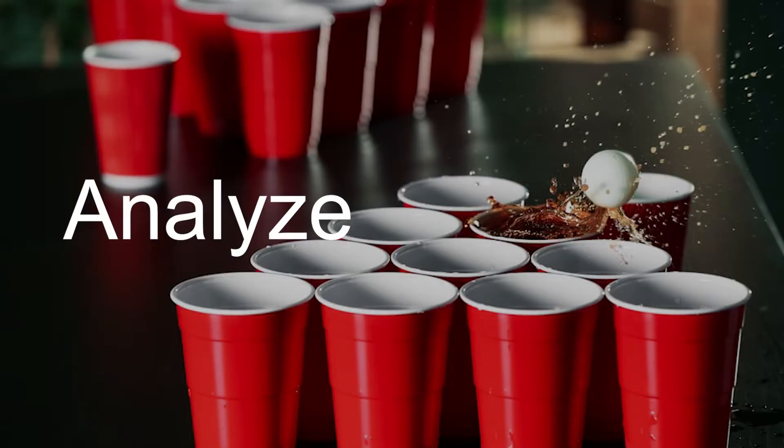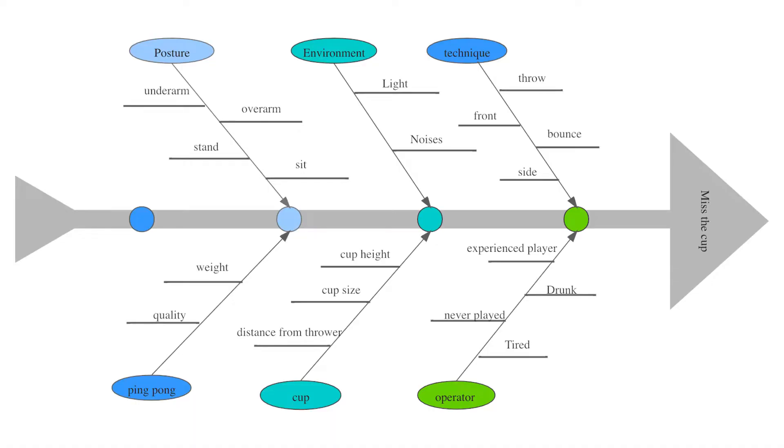To perform analysis on this experiment, we begin by constructing a fishbone diagram to analyze the cause and effect factors that would cause a player to miss throwing the ball into the cup. We identify the major factors such as posture of throw, throwing technique, environmental factors, ping pong ball weight and quality, cup height, size and distance from thrower, and operator experience and physiological factors.